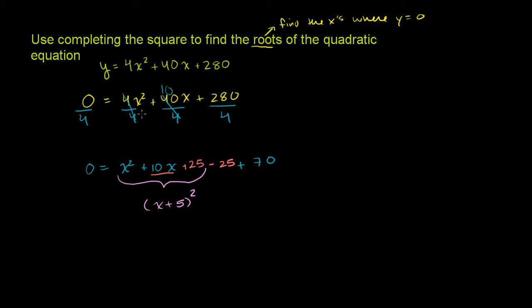So those first three terms become that. And then the second two terms right there, you just add them. Let's see, negative 25 plus 70. Let's see, negative 20 plus 70 would be positive 50. And then you have another 5, so it's plus 45.